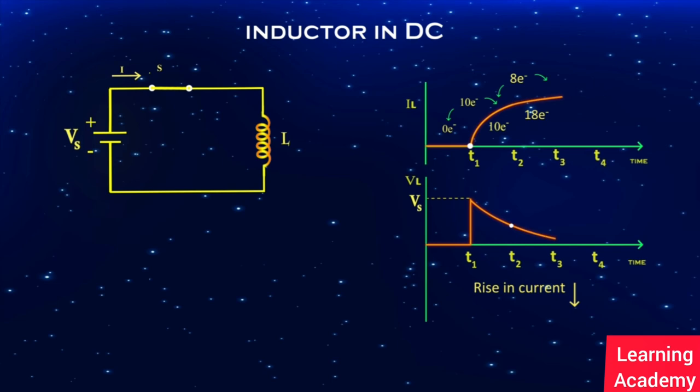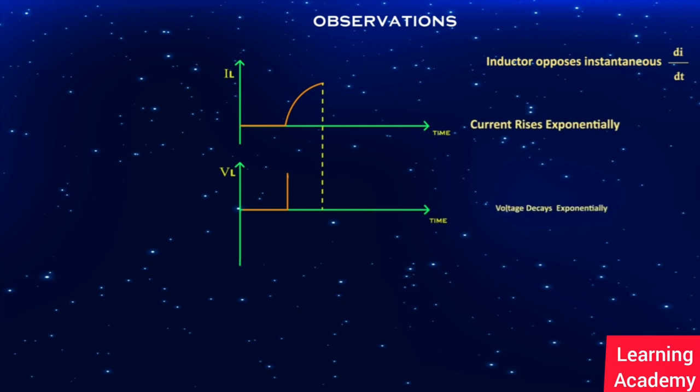Between time t3 and t4, the same procedure will continue till current reaches steady state. That is, at time t4, the rate of change in current becomes zero. Hence, the induced voltage becomes zero. At this point, the change in flux becomes zero, which means the flux is constant. So we can say that the inductor stores energy in the form of magnetic field. We can observe from the above cases that inductor is opposing the instantaneous change in current. That is why current rises exponentially and voltage decays exponentially before reaching steady state.